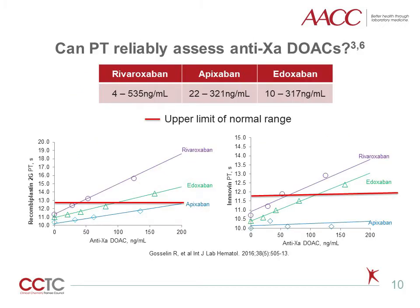This table represents the on-therapy range for each anti-Xa DOAC. The figures demonstrate the response of the two commonly used PT reagents in the U.S. — Recombiplastin 2G and Innovin — to various concentrations of DOAC-enriched normal plasma. The red line represents the upper limit of normal for the reagent instrument platform used. Note the drug concentration for each DOAC that intercepts the upper limit of normal. These data suggest the unreliability of the PT to adequately rule out drug presence or to estimate levels.